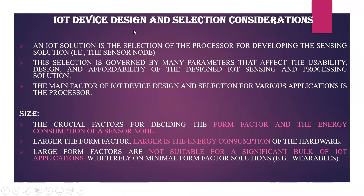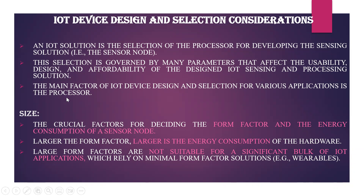Why do we need to look at the design of a device and how to choose those devices? When you are developing an IoT application, the selection of a processor is a must. Only when you select the processor can the development of any sensing elements be done. This selection will be governed by many parameters — it should not affect usability, the design should be simple and best, it should be affordable, and many other parameters. The main factor of IoT device design and selection for various applications will be the processor, which is the main heart of the application.